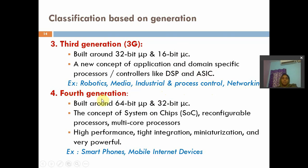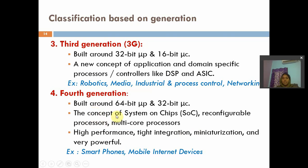Fourth generation is based on microprocessors, microcontrollers, DSPs, and ASICs. Along with these, we have system on chips, reconfigurable processors, and multi-core processors available in fourth generation. These fourth generation embedded systems are very high performance, very powerful, and feature tight integration. These are used in smartphones and mobile internet devices. These are the four types of generation-based embedded systems.